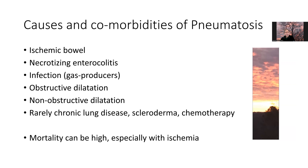Specifically, any sort of ischemic bowel would be a cause for this, as would necrotizing enterocolitis in the neonatal population, but also a number of infections, especially those associated with gas-producing organisms. Additionally, when patients have obstructive dilatation, sometimes that can lead to cracks or defects that result in gas leaking into the interstitial tissues, and this can happen both with obstruction and non-obstruction. Rarely, other problems like chronic lung disease, scleroderma, chemotherapy, and other conditions can be associated with this particular problem.